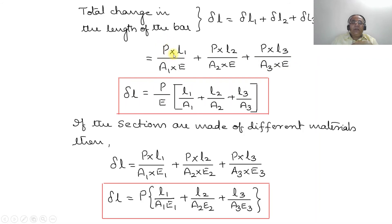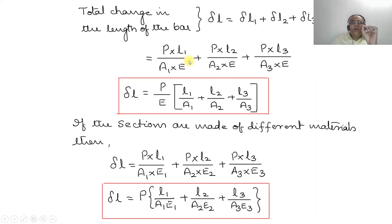Since the same load P acts at all cross-sectional areas and the material of the stepped bar is the same for all sections, we take P/E as a common factor. Therefore delta_L = (P/E) · (L1/A1 + L2/A2 + L3/A3).